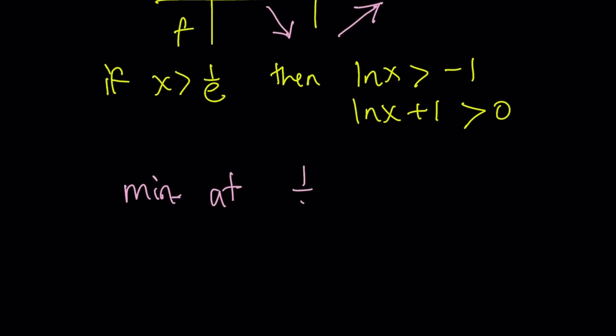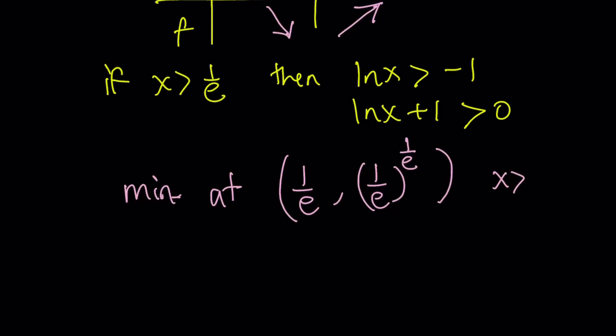If you replace x with 1 over e in our function x to the power x, you get the minimum point at (1/e, (1/e)^(1/e)) as the y-coordinate. Obviously x must be positive, and that's our minimum point. That's one of the functions — we're going to look at the graph at the end.